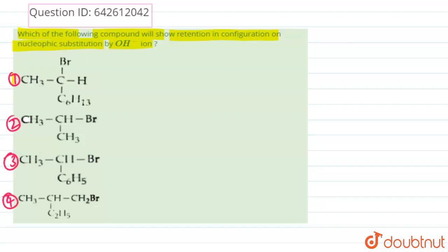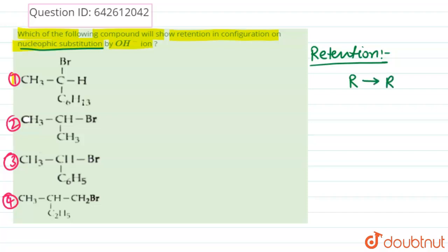Let us talk about what is retention. If any compound is optically active and its configuration is R, and again on nucleophilic substitution we get configuration R, then we say retention takes place. Similarly, if the compound has configuration S and after nucleophilic substitution by OH⁻ ion the configuration remains S, then retention takes place.